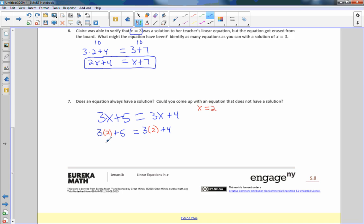Let me explain that a little further by saying, let's let x equal 2. When I plug this in, I get 3 times 2 plus 5 equals 3 times 2 plus 4. 3 times 2 is 6 plus 5. 3 times 2 is 6 plus 4. 6 plus 5 is 11. 6 plus 4 is 10. It is not true. Does an equation always have a solution? No. Could you come up with an equation that does not have a solution? Yes. There's an example. There's many others, but that's just one.